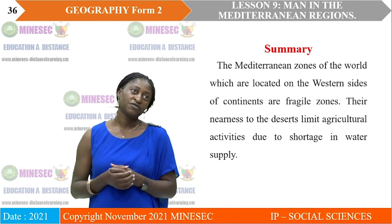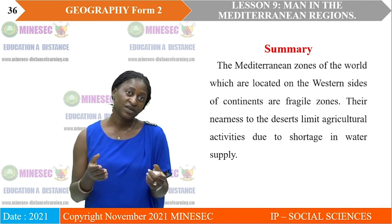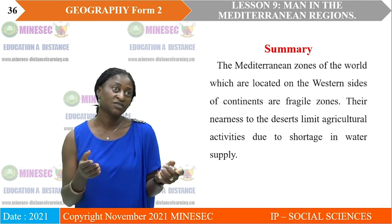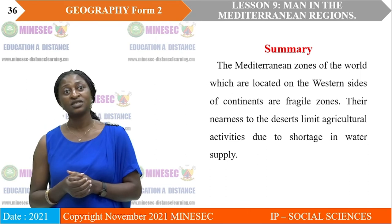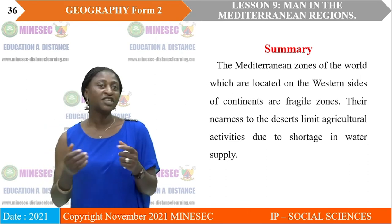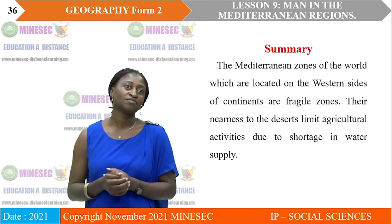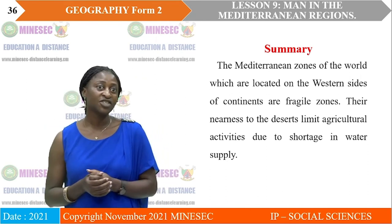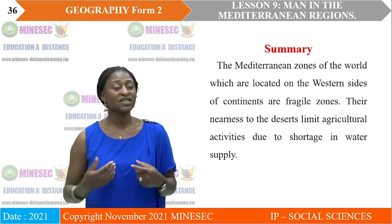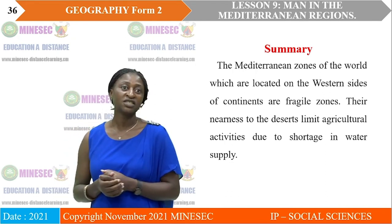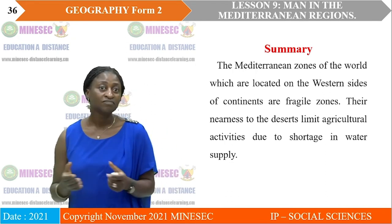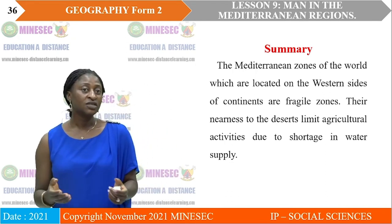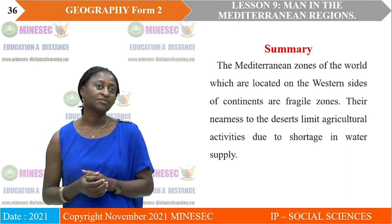In summary, the Mediterranean region, as we have already seen, is found on the western side of the continent. It is a very fragile zone, and because of its fragile nature we saw limited agricultural activity because of little or no water.